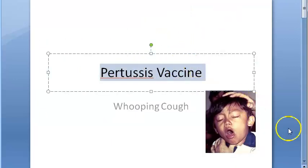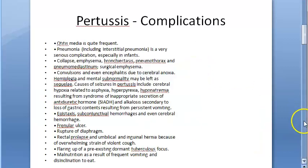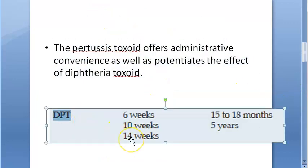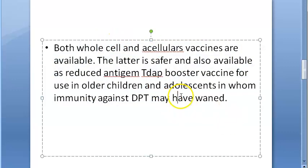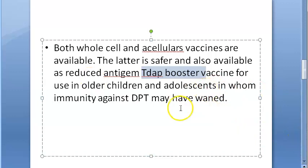So in this video we looked at the pertussis vaccine — a vaccine against whooping cough. We looked at the dangers of pertussis, then the schedule: 6, 10, 14 weeks, booster at one and a half years and five years. Pertussis toxoid increases the effect of diphtheria toxoid — that is why they are combined. There are whole cell and acellular options. The Tdap booster is for older children and adolescents. When you see a small 'd' or small 'p', those are adult doses.